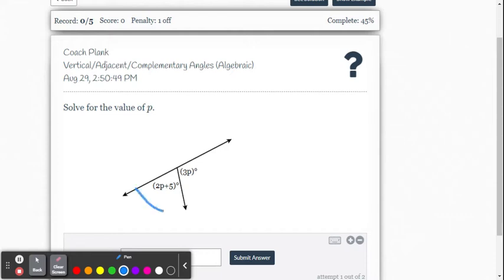So here are the two angles. We know that that's a linear pair, and we know that all linear pairs are supplementary, which means they add up to 180 degrees. So to write the algebraic equation, it's simply going to be 2p plus 5 plus 3p equals 180 degrees.